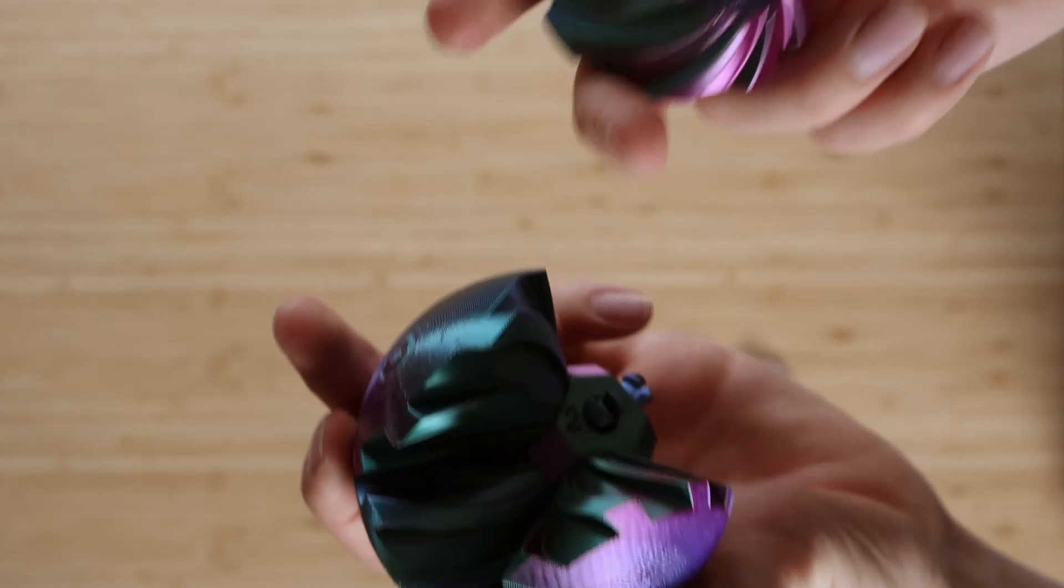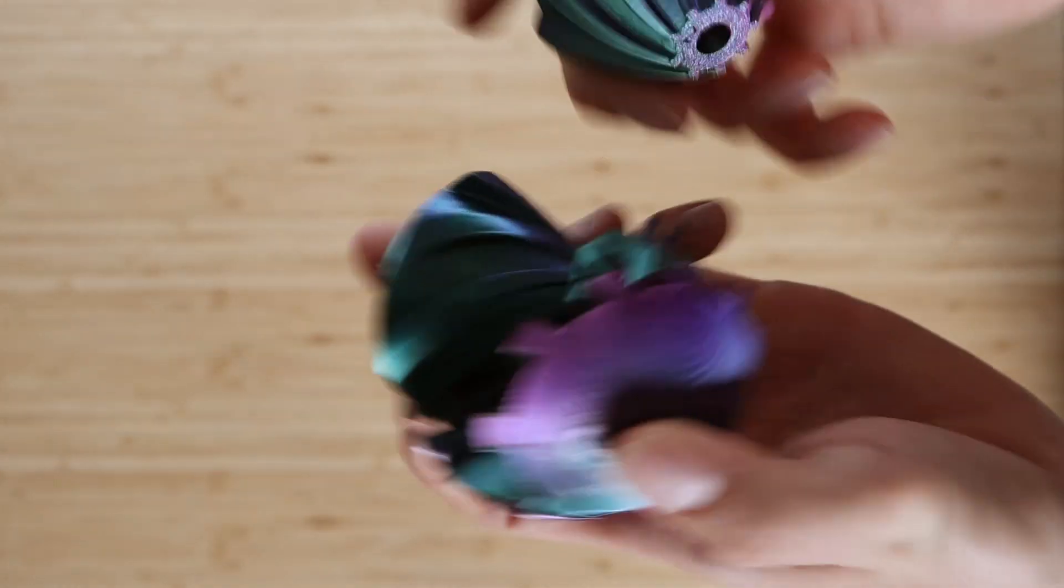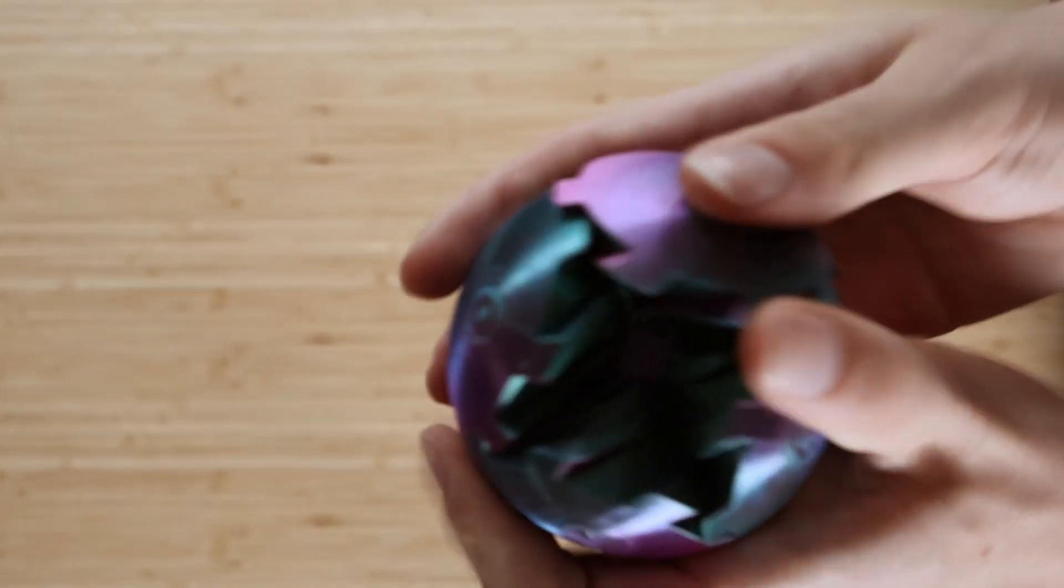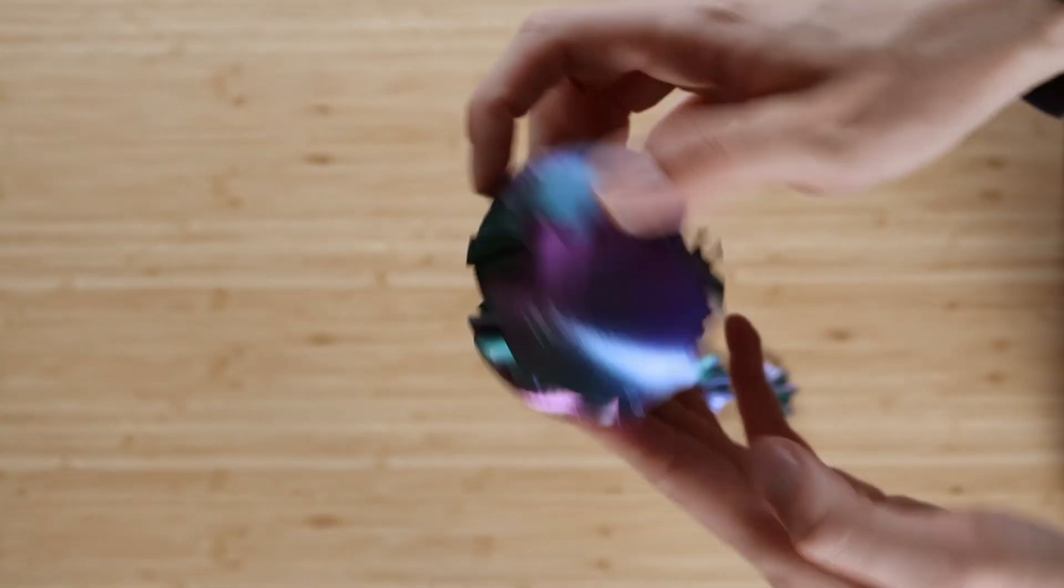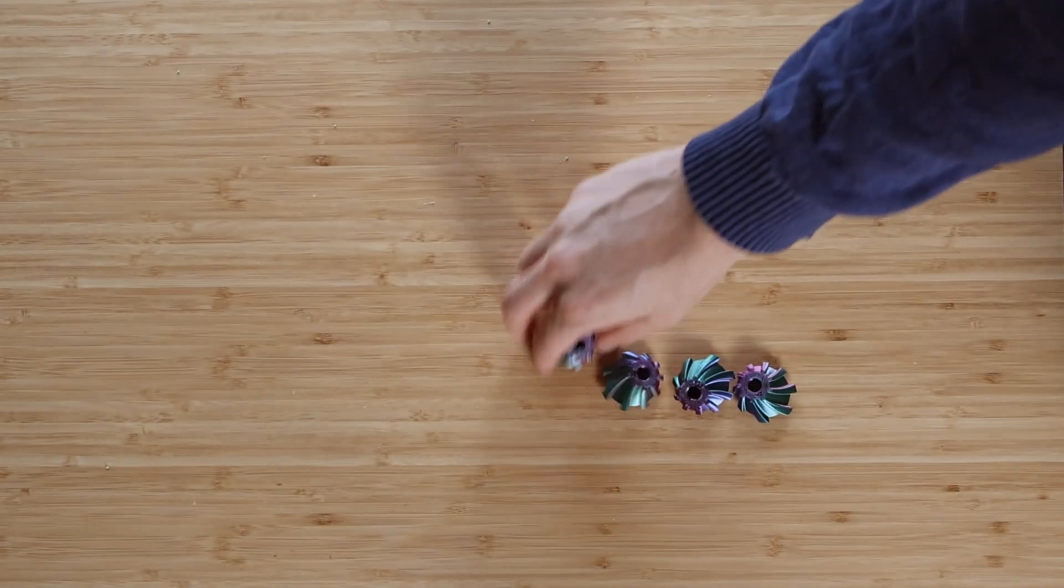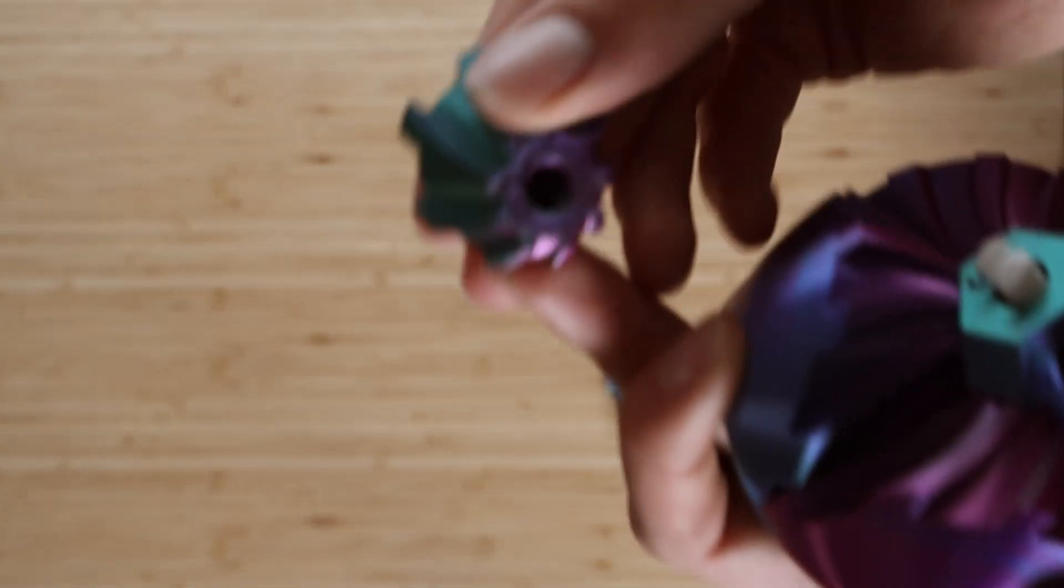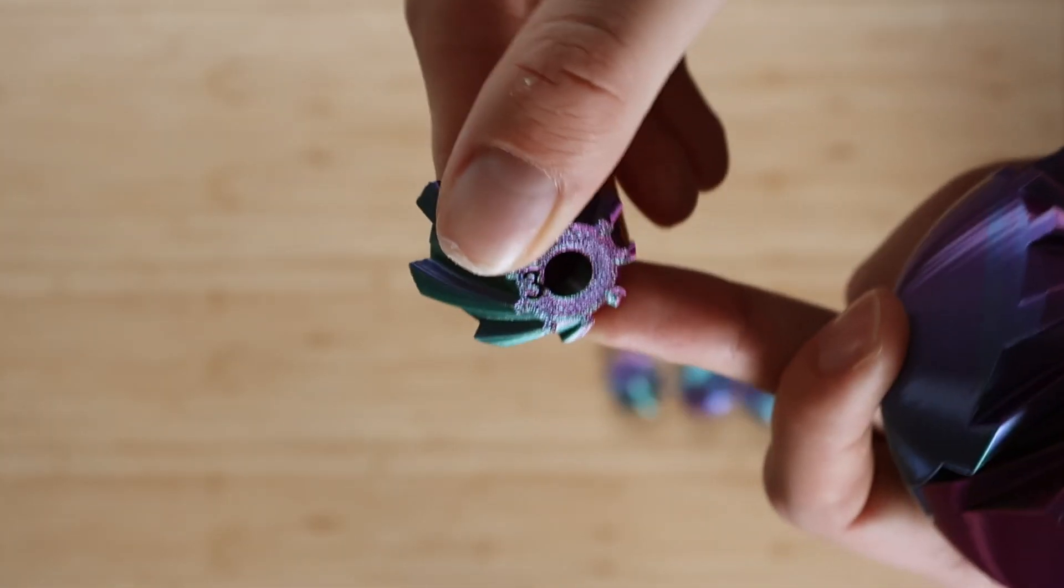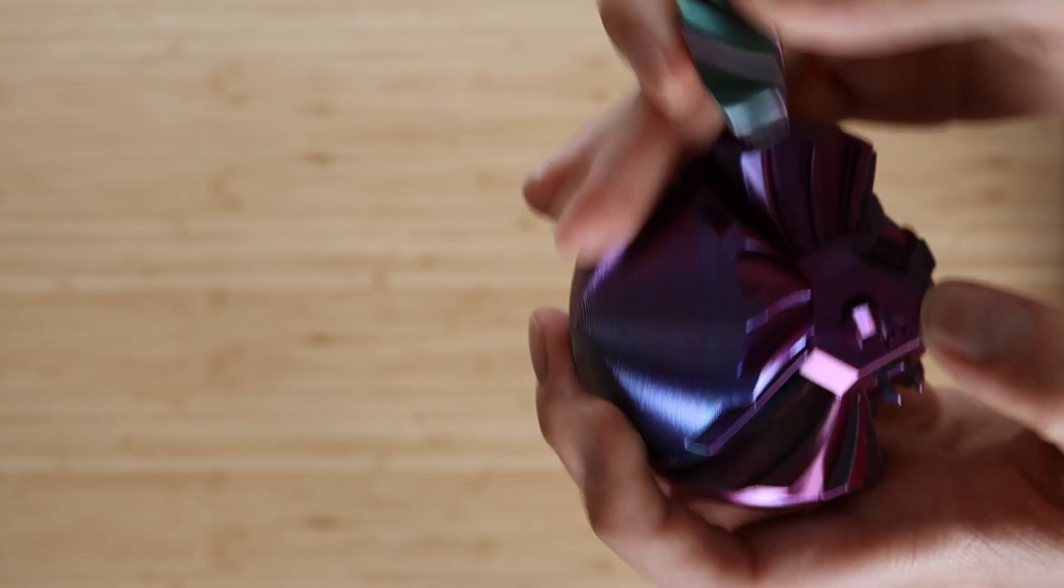And then the next one which is number two just in between those two pieces, and you should now have this shape already. So let's take small gear with the number three next.